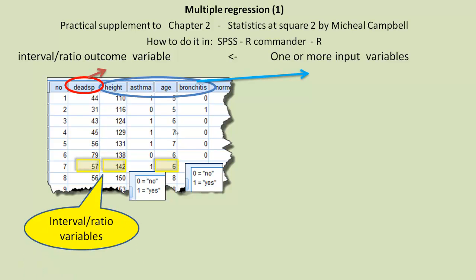Interesting thing to note is that besides dead space, which is an interval ratio variable, which it must be, we also have height and age as interval ratio data. And we also have asthma and bronchitis as nominal variables. So we've got a mixture of types of variables as the input variables.